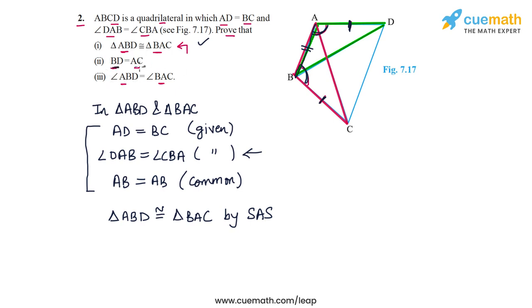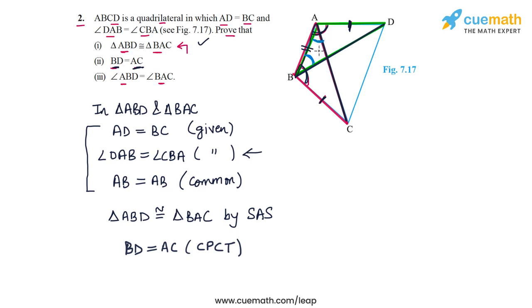Now looking at BD and AC — BD is this side and AC is this side. These are a corresponding side pair for the two triangles, so BD is equal to AC by CPCT (corresponding parts of congruent triangles). Similarly, angle ABD is equal to angle BAC because these are corresponding parts of the two congruent triangles.